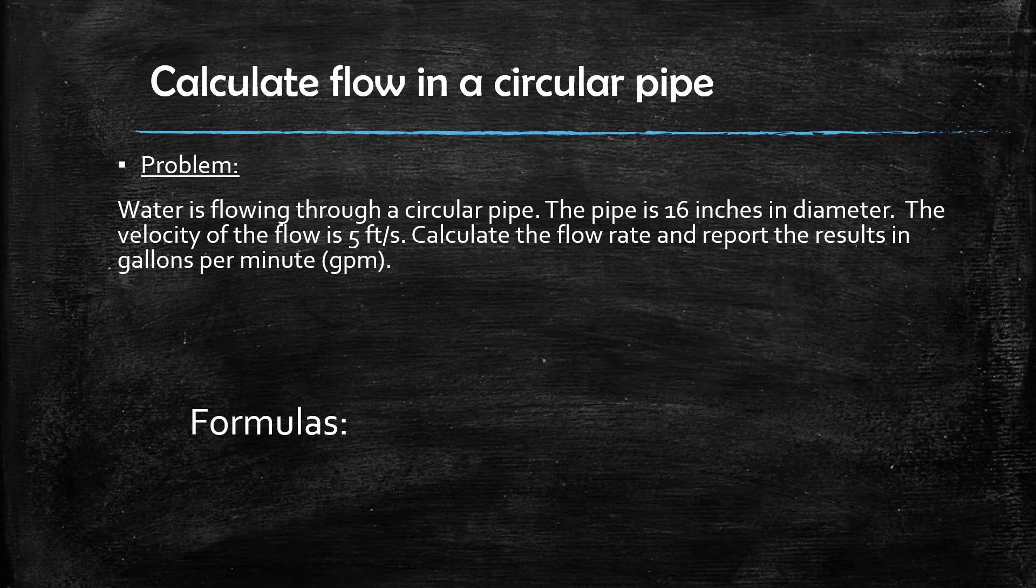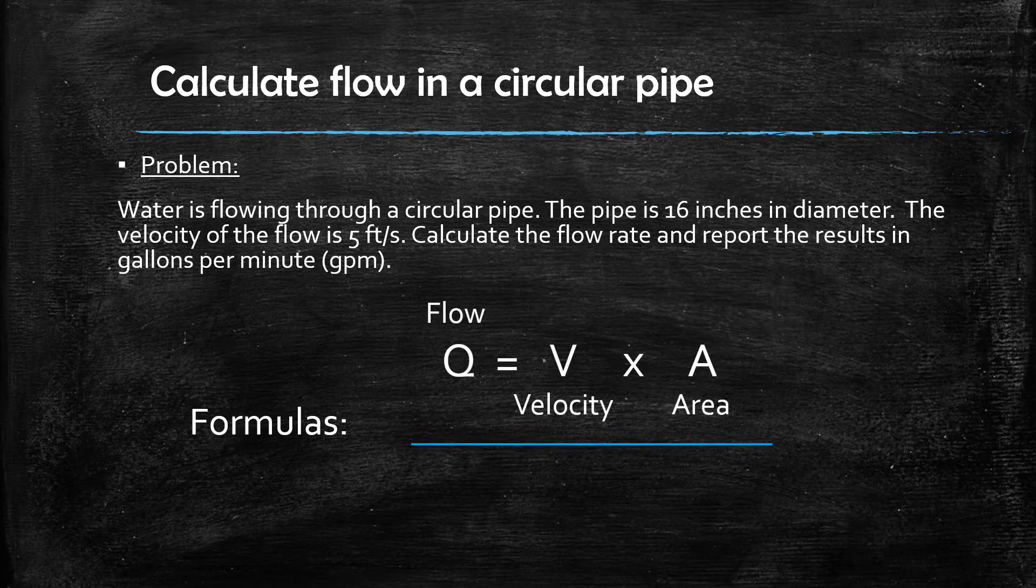All flow rate type problems like this one utilize the same formula for calculating flow rate. The formula is Q, which is the symbol for flow rate, is equal to the velocity of the flow multiplied by the cross sectional area of the pipe. In this case it is a circular or round pipe.